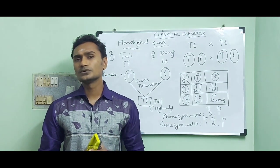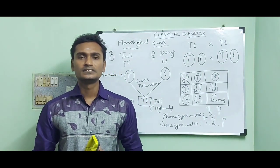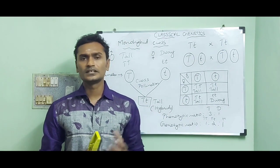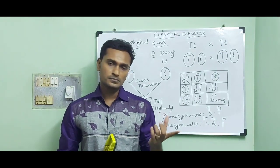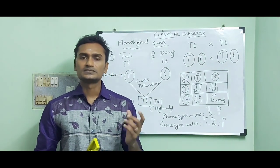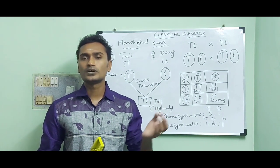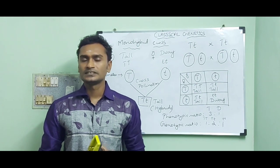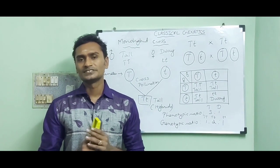In our book, they mention an important method called the Forkline method. That method is used to figure out the phenotypic probability and genotypic probability of dihybrid, trihybrid, and polyhybrid crosses. In my future video, I will explain that method. I am going to conclude this video session.